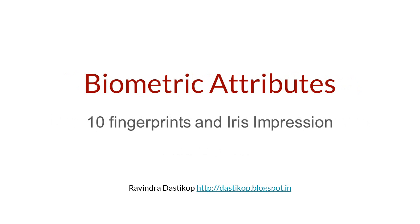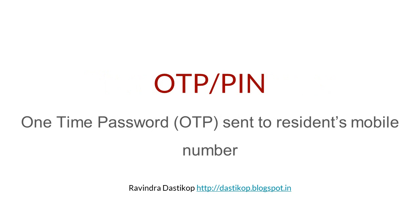The second category of attributes are called biometric attributes. These include 10 fingerprints and iris impressions of each resident. In addition to the demographic and biometric attributes, two more attributes are used. They are called OTP and PIN — one-time password sent to the resident's mobile number during an authentication process. For example, if you are creating an account on the DigiLocker system, then an OTP mechanism of verification is used.